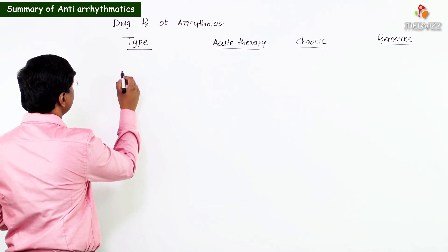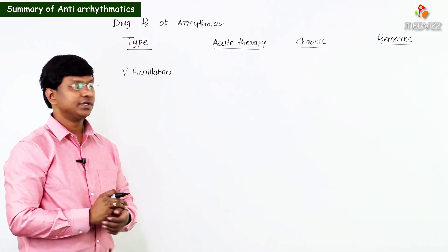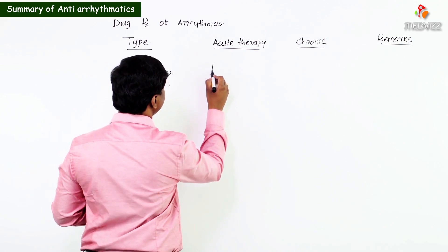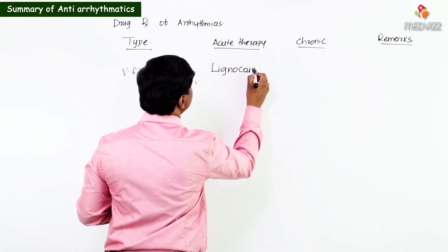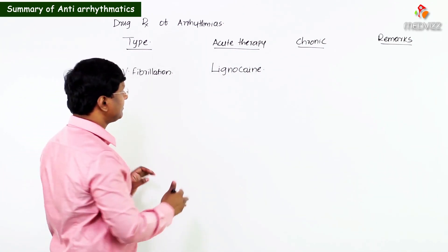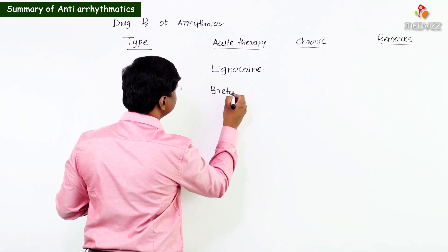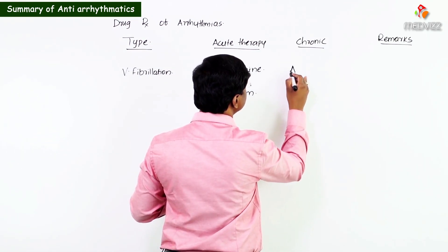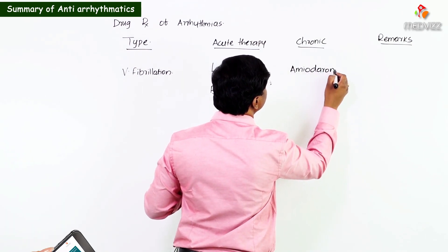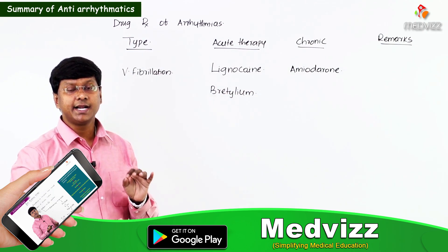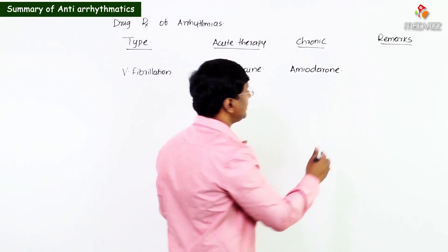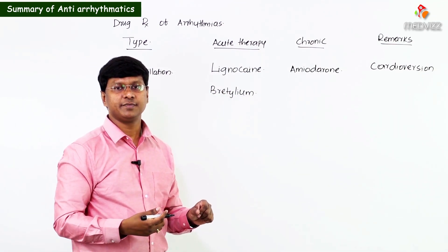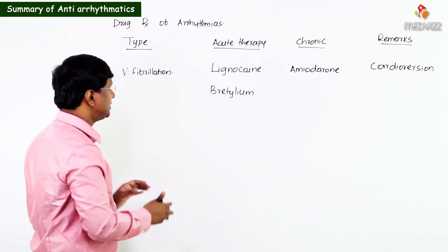In ventricular fibrillation, the drugs for acute therapy are lignocaine and bretylium. For chronic therapy, we give amiodarone. Remember, cardioversion is the treatment of choice in hemodynamically unstable patients with ventricular fibrillation.